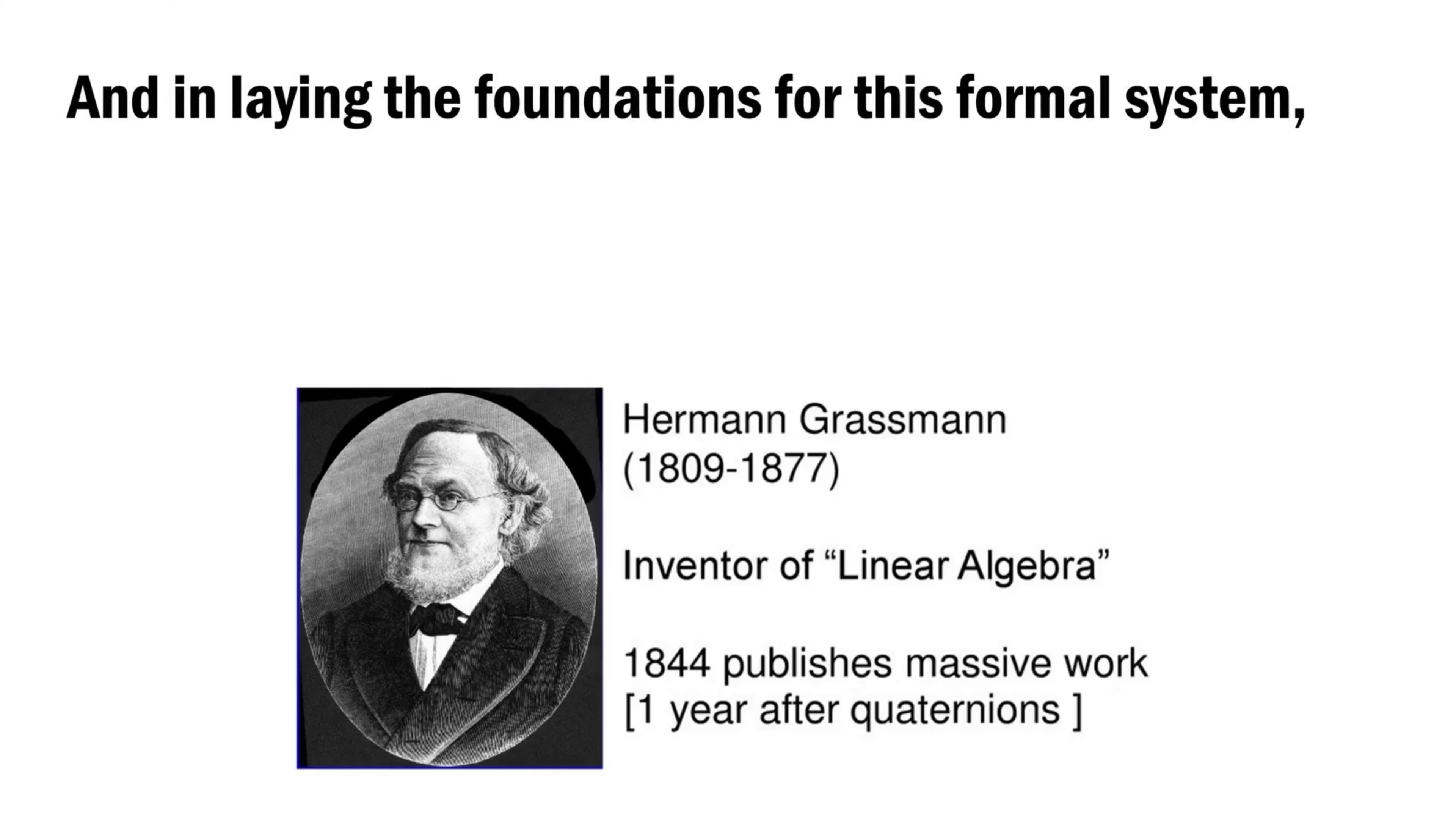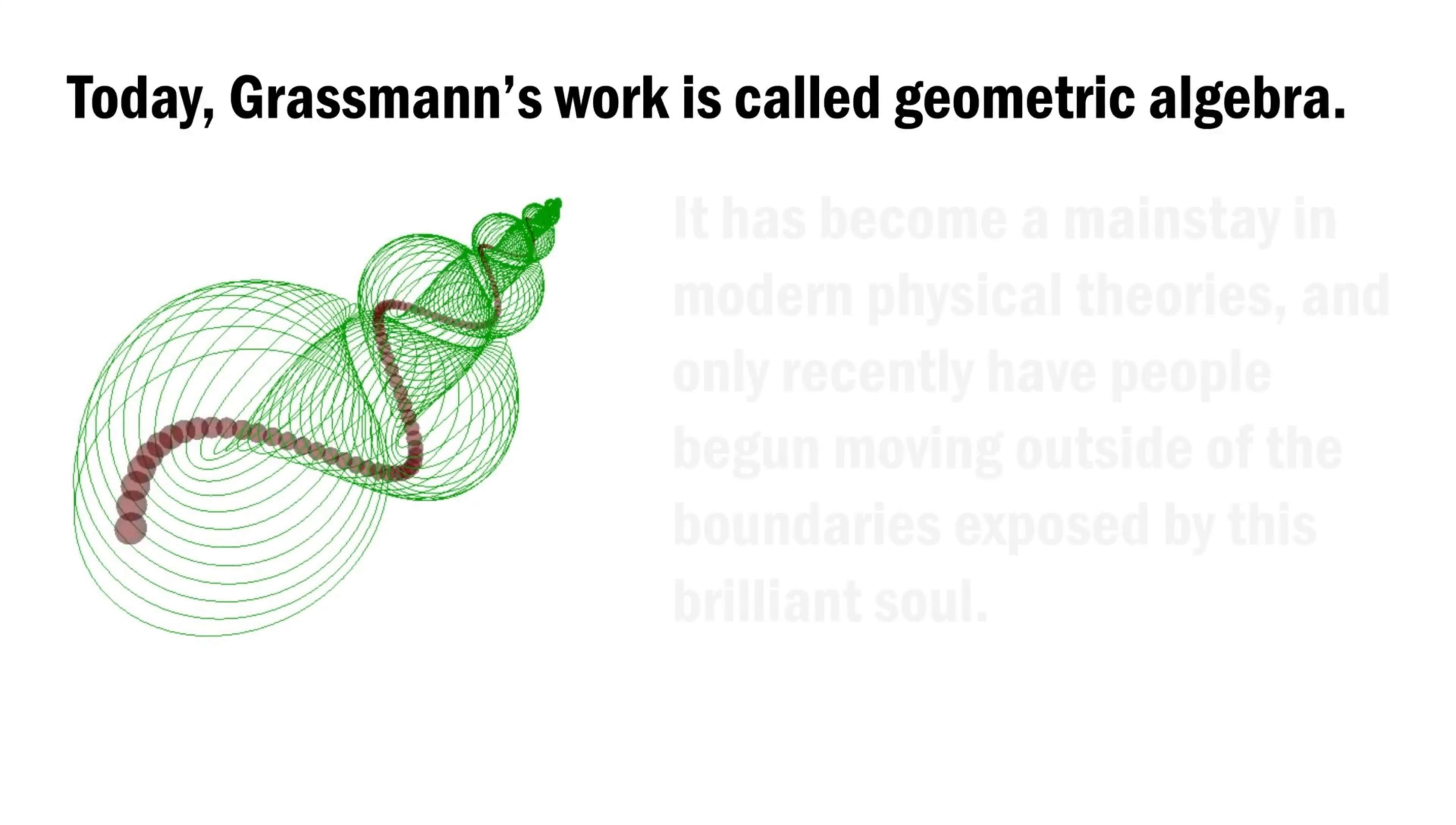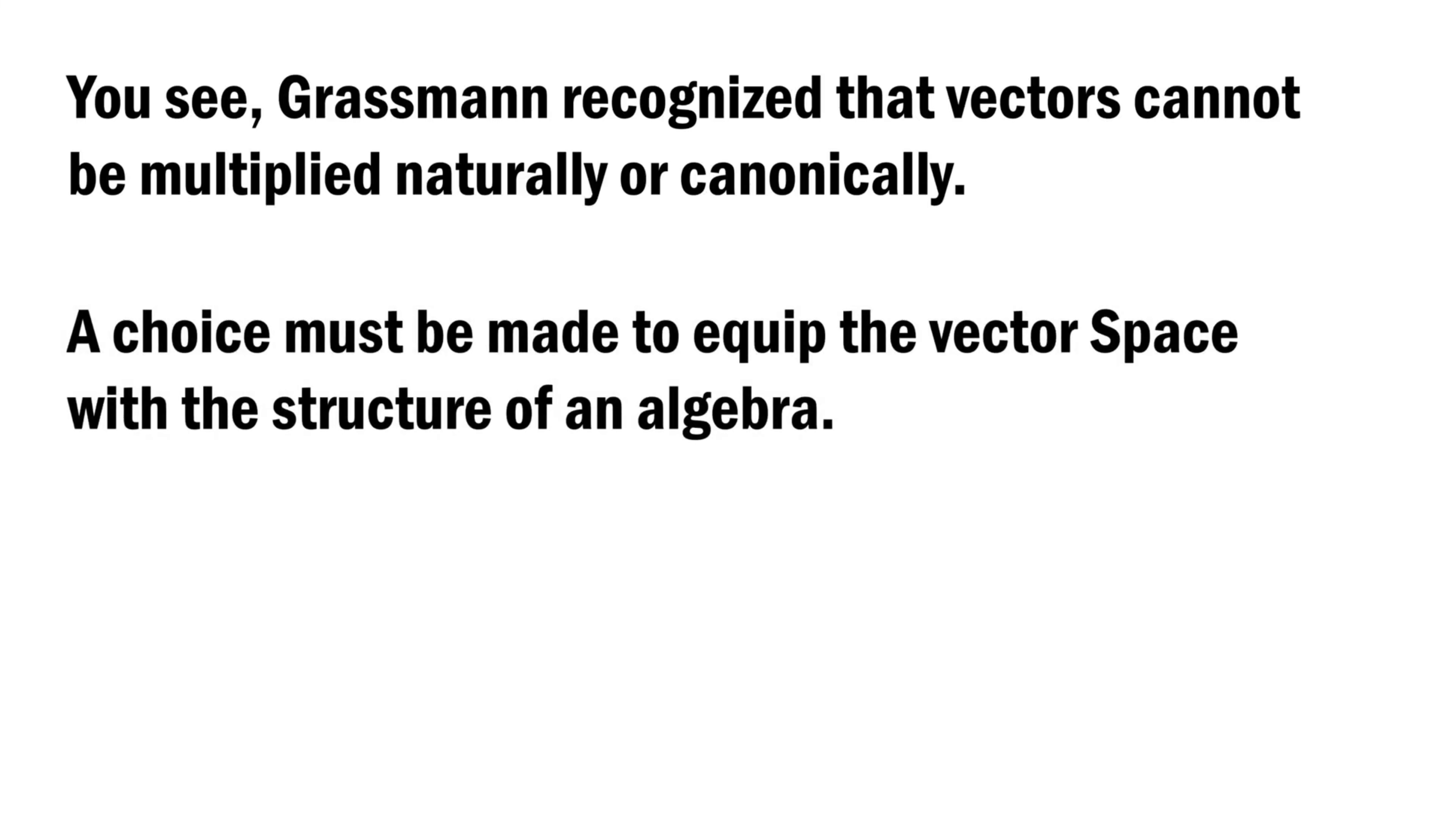And in laying the foundations for this formal system, he was the first to contrast the algebra of linear spaces, and so also the first to suggest non-linear algebra. Today, Grassmann's work is called Geometric Algebra. It has become a mainstay in modern physical theories. And only recently have people begun moving outside of the boundaries exposed by this brilliant soul. You see, Grassmann recognized that vectors cannot be multiplied naturally or canonically. A choice must be made to equip the vector space with the structure of an algebra.